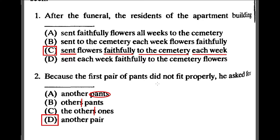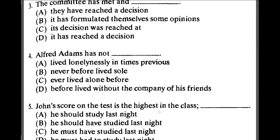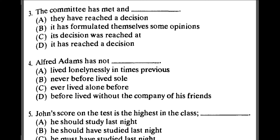Number three: 'The committee has met and they have reached a decision.' We do not have to say 'they' again — the committee is actually 'it', not 'they'. So the correct form uses 'it has reached a decision.' D is the best answer because the committee is a singular collective noun referred to as 'it', not 'they'.